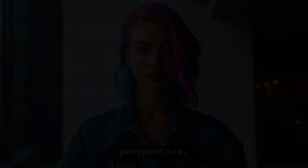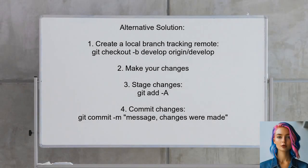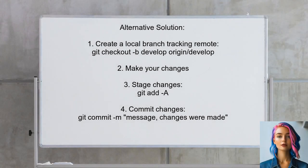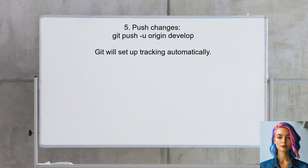Another approach to connect your local branch with the remote branch is to create a new local branch that tracks the remote branch using the command: git checkout -b develop origin/develop. After making your changes, use git add -a to stage them, followed by git commit -m to commit your changes. Finally, push your changes with git push -u origin develop, which will set up the tracking information automatically.